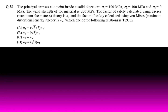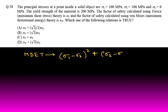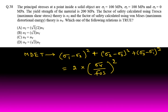For the Maximum Distortion Energy Theory (Von Mises / MDEt), the formula for 3D stress state is: (σ1−σ2)² + (σ2−σ3)² + (σ3−σ1)² = 2×(σy / FOS)².